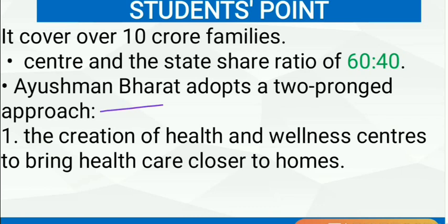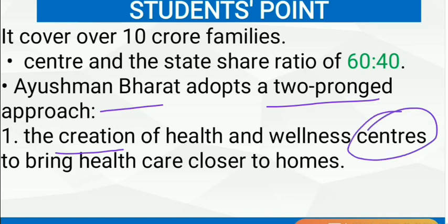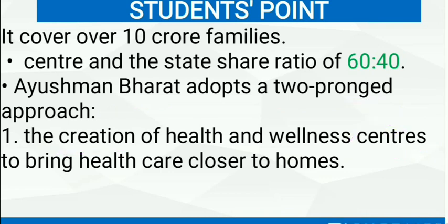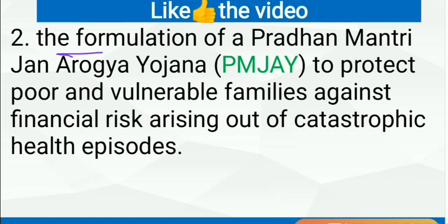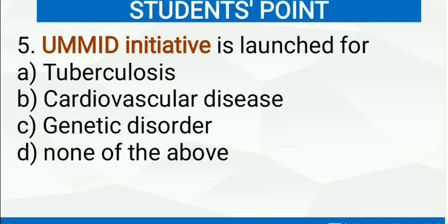Ayushman Bharat adopts a two-pronged approach: the first is creation of Health and Wellness Centers to bring healthcare closer to homes, and the second is formulation of Pradhan Mantri Jan Arogya Yojana to protect poor and vulnerable families against financial risk arising out of catastrophic health episodes.